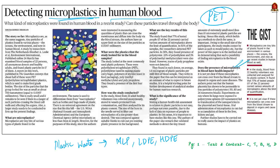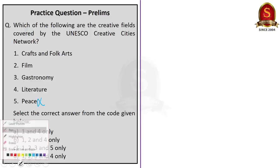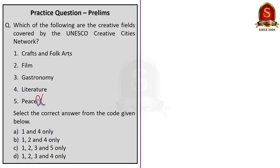Now let us take up the first question in the practice question discussion session. Which of the following are the creative fields covered by the UNESCO Creative Cities Network? The options include crafts and folk arts, film, gastronomy, literature, and peace. We know that the Creative Cities Network covers seven fields, but peace is not one of them. The remaining three fields are media arts, design, and music. So options one, two, three, and four are correct, and the correct answer is option D — one, two, three, and four only.